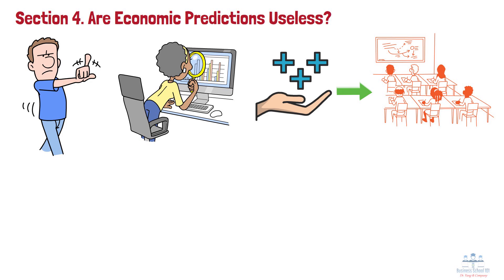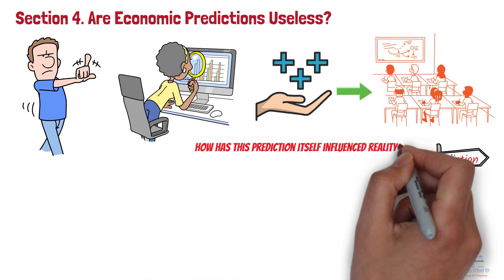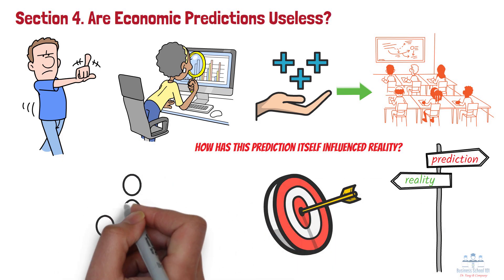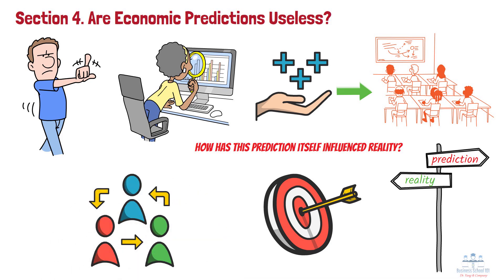The next time you see a discrepancy between an economic prediction and reality, perhaps you can approach it from a different angle—how has this prediction itself influenced reality? The question of whether the prediction is accurate might not be as important. What matters is understanding the fascinating interactive relationship between predictions, decisions, and outcomes.